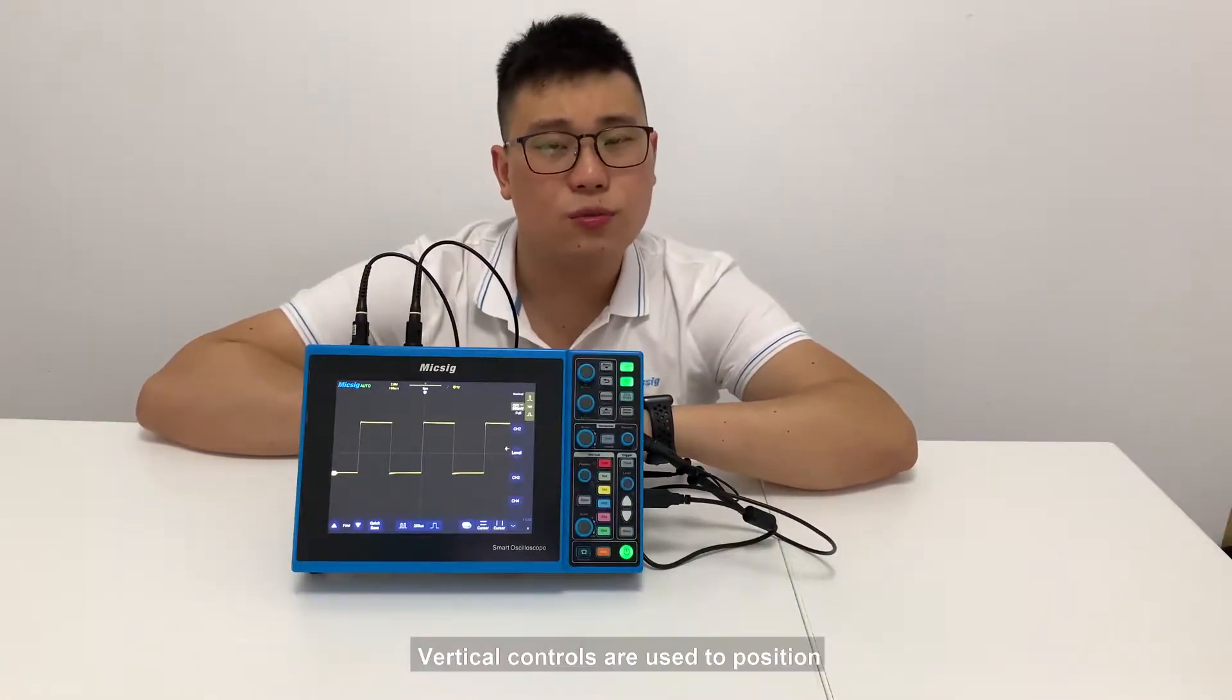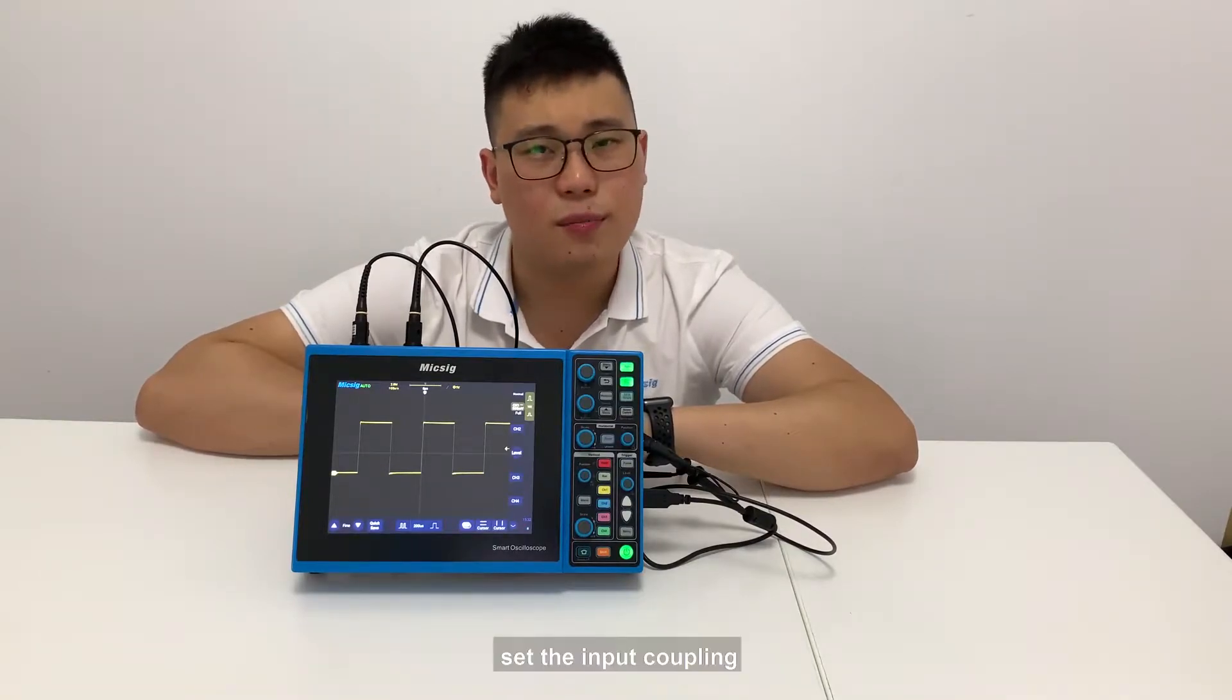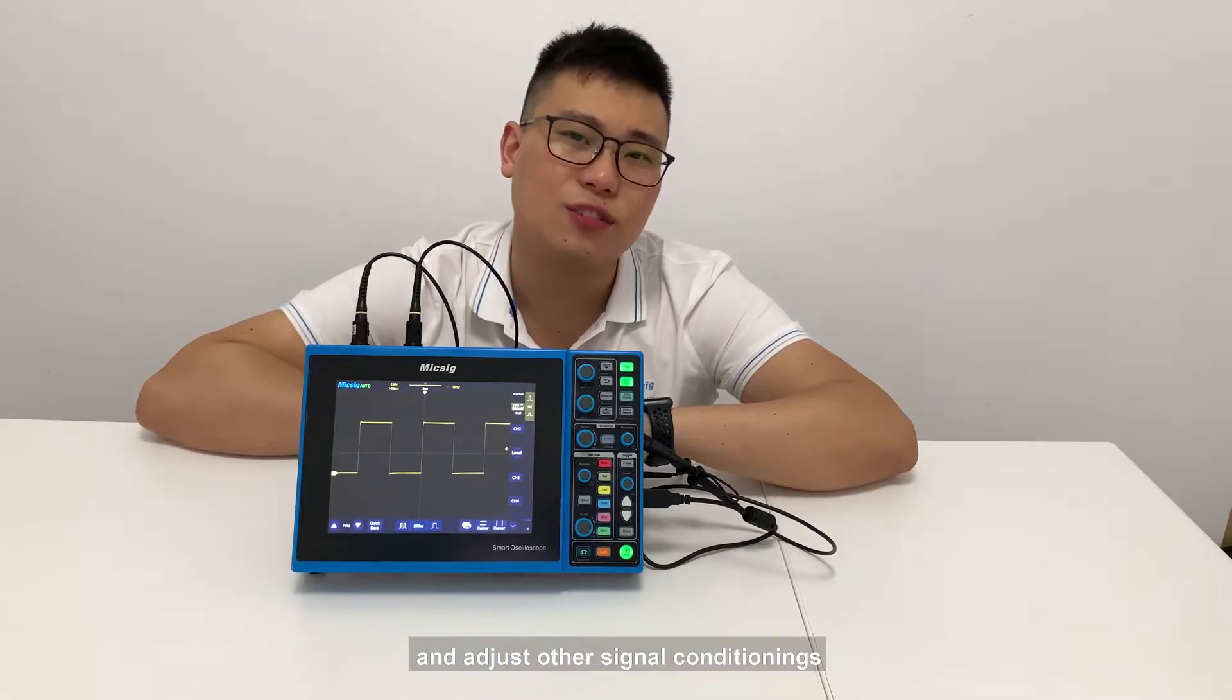Vertical controls are used to position and scale the waveform vertically, set the input coupling, and adjust other signal conditions.